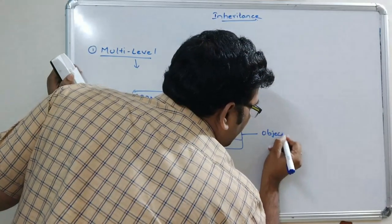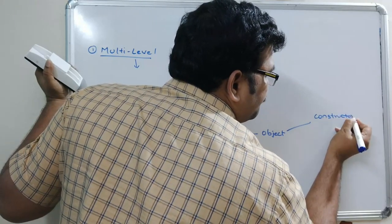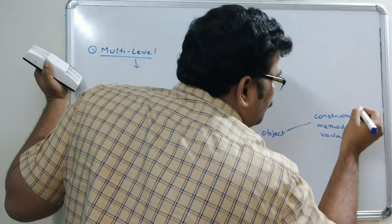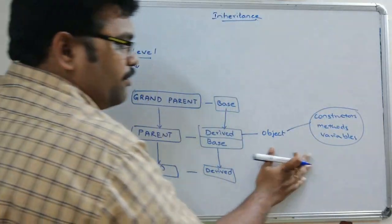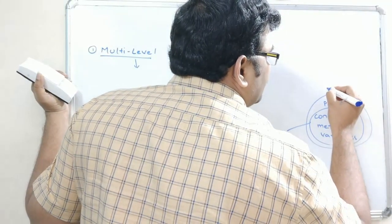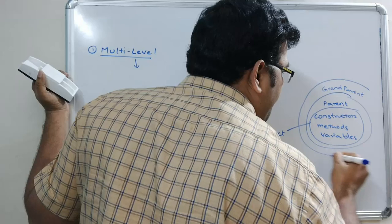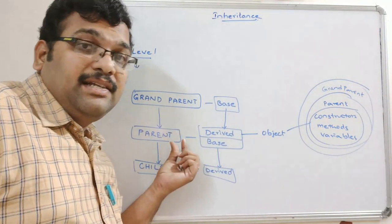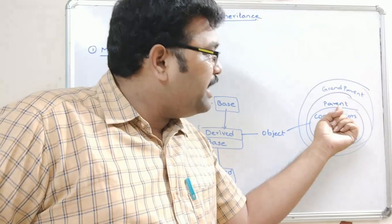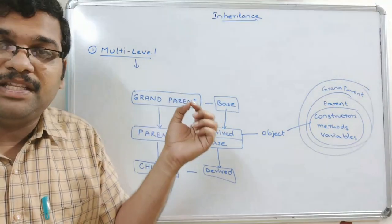If you create an object for the parent class, through this object you can access the constructors, methods, and variables of parent as well as grandparent — because parent is derived from grandparent. So from the derived class object we can access the variables and methods of both the derived class and the base class.